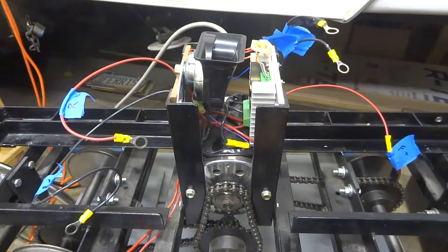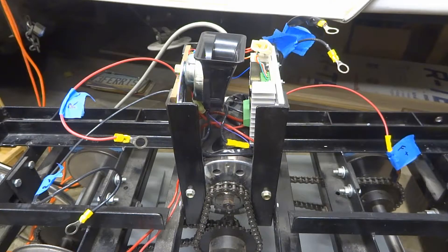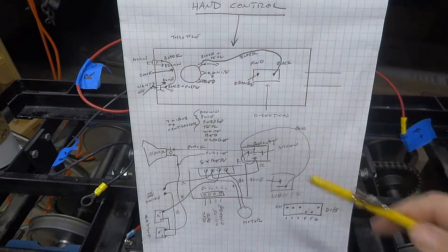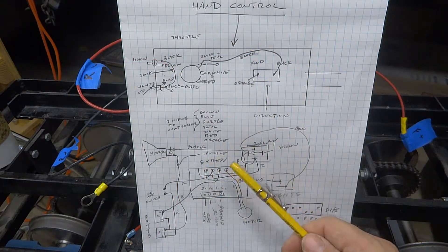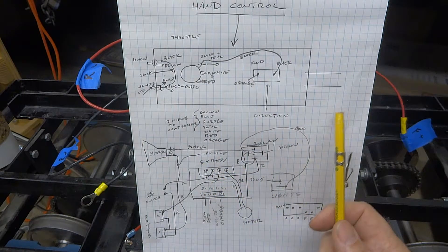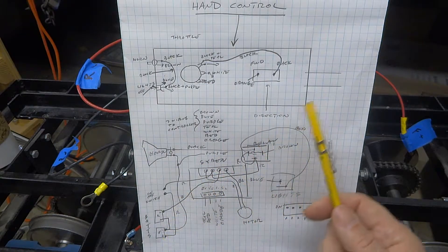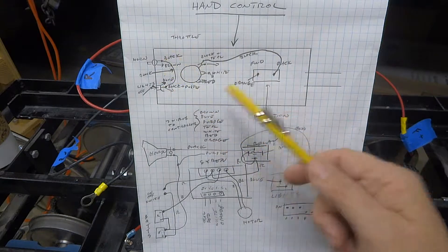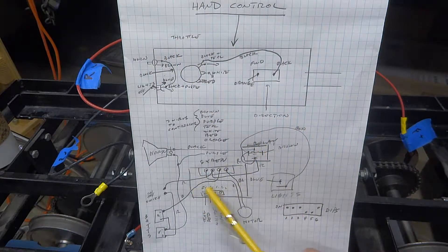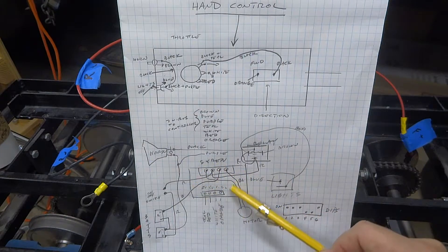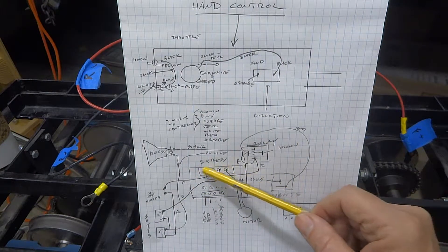You can see I've been doodling a little bit on this sheet, trying to create a circuit diagram roughly for everything that's involved. This is the hand control up here, this is the relay for the horn, this is the speed controller.